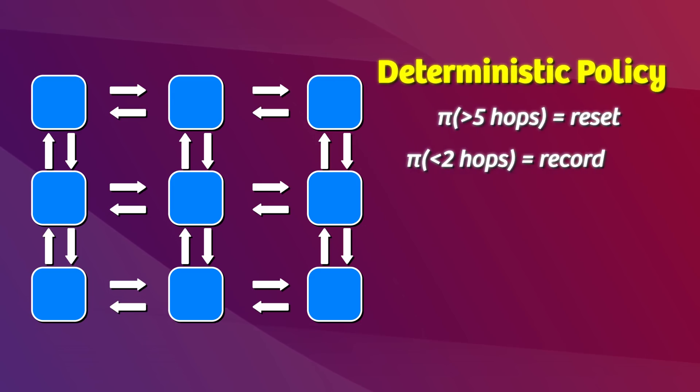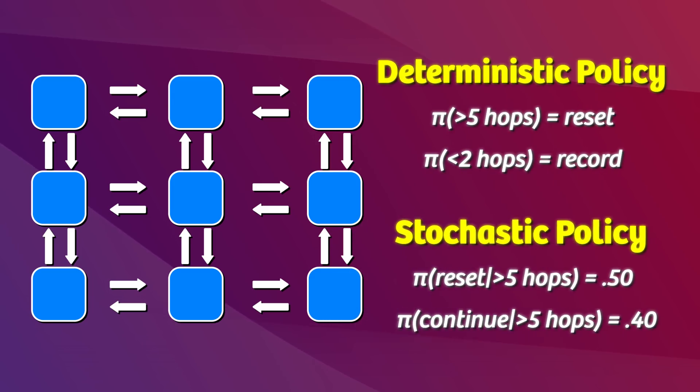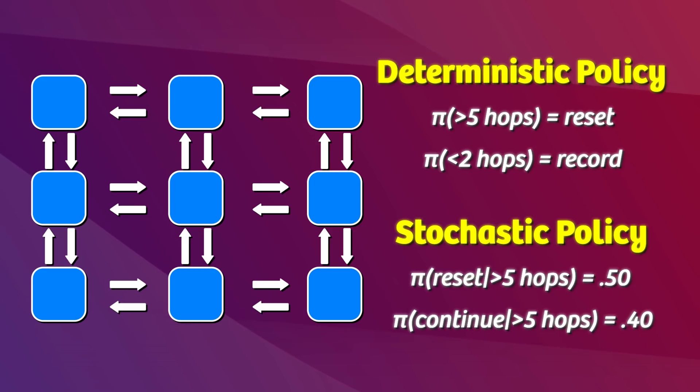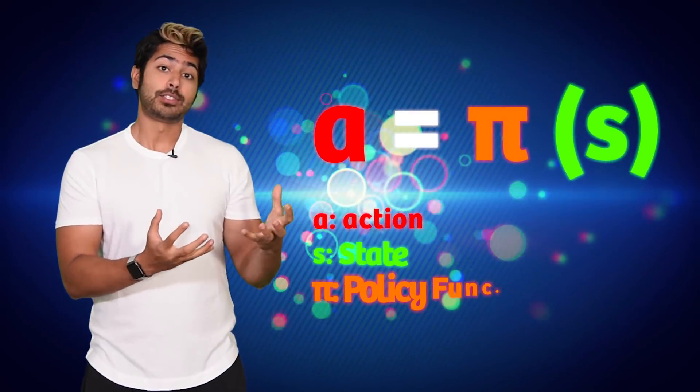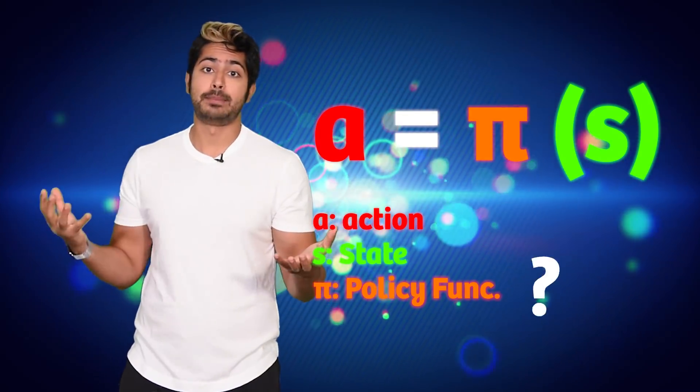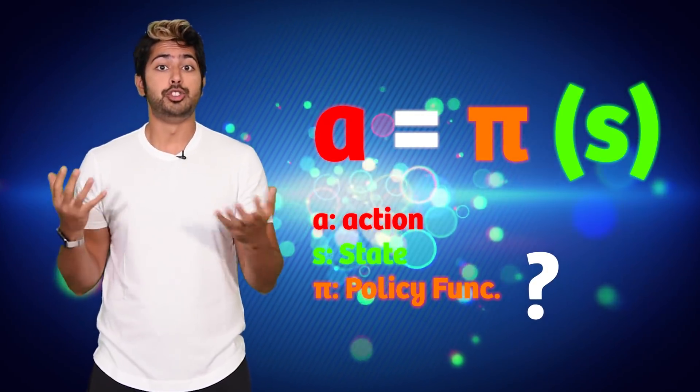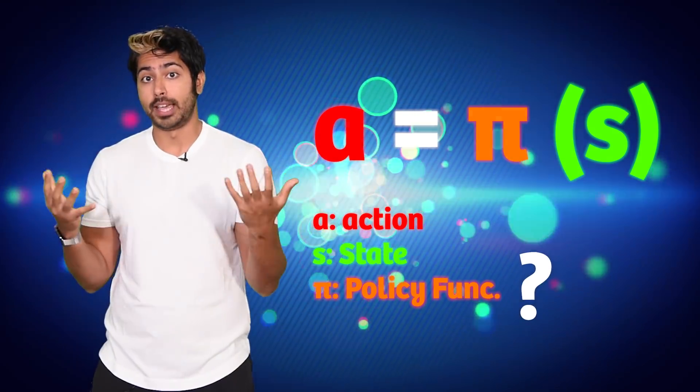A stochastic policy would say something like, whenever the network requires more than 5 hops, reset the process with a 50% probability. Or, continue routing with a 40% probability. And otherwise, continue operating as per normal. Whenever it's able to achieve a transfer in 2 hops or less, record that in an activity log with a 90% probability. Otherwise, continue operating normally. We can actually express a deterministic policy using the same mathematical notation that we would generally reserve for a stochastic policy, if we'd like, as well.